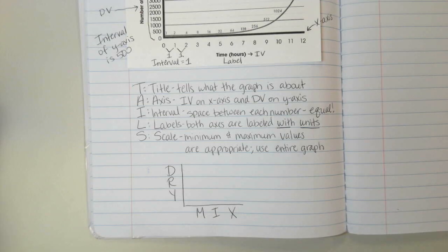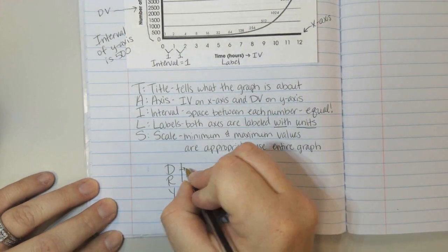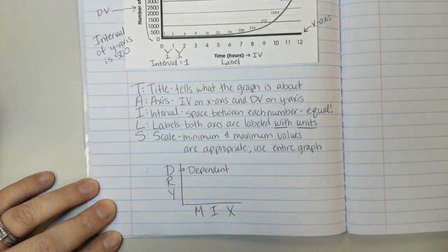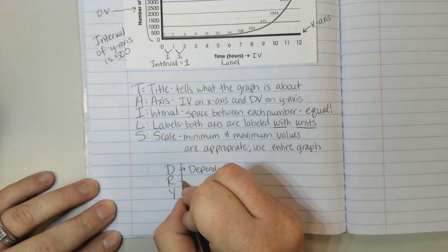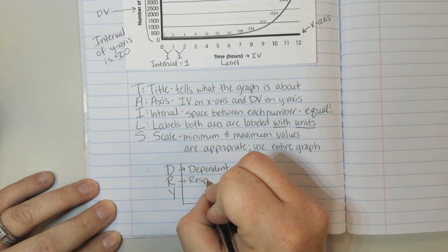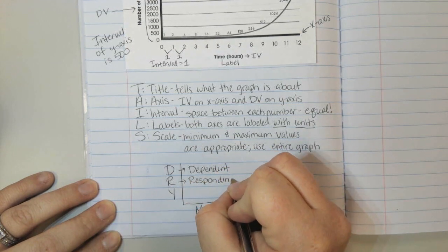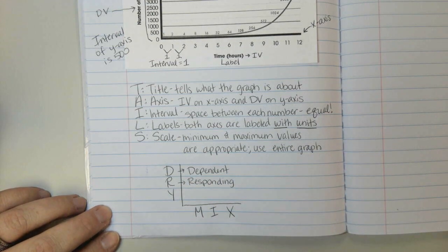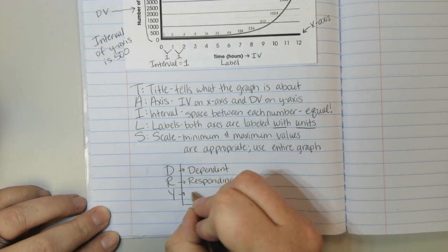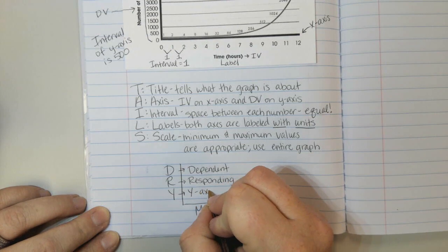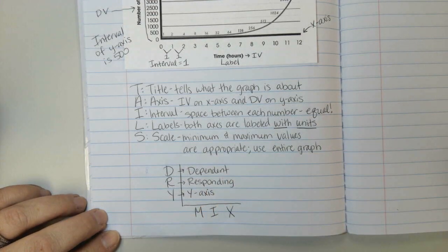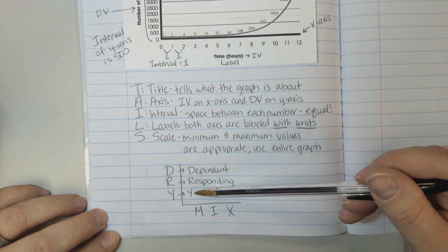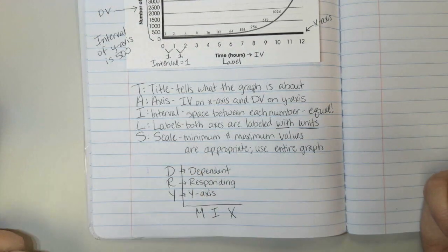So the D stands for dependent. Remember that's the variable that depends on the other one. Another way to describe that variable is responding. Sometimes it's called a responding variable because it responds to the other one. And then the Y, of course, that stands for Y-axis. That's our vertical up and down axis. So when you think dry, the D for dependent goes with the Y for Y-axis.